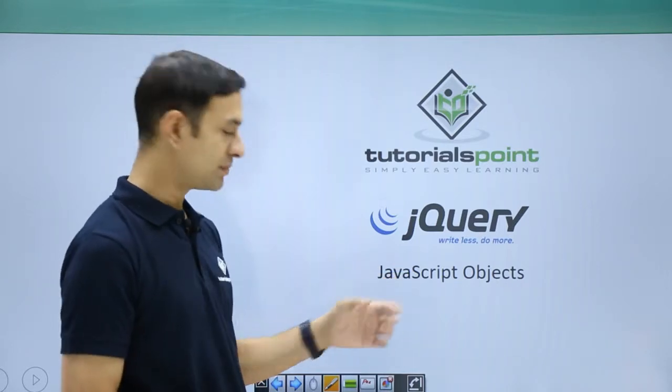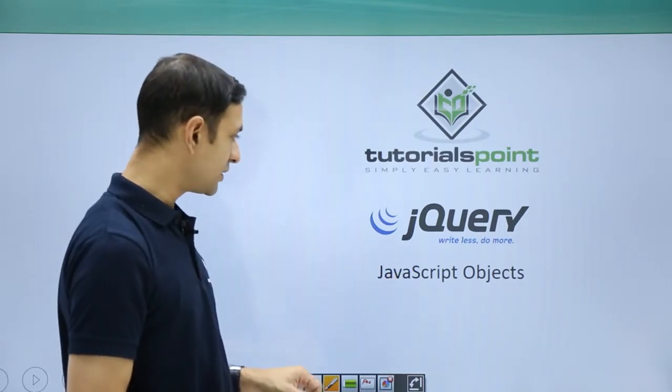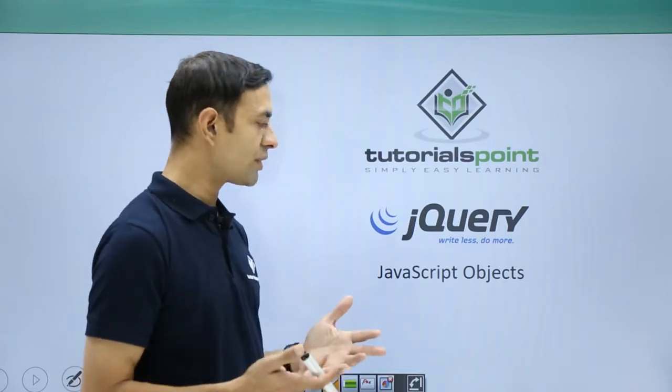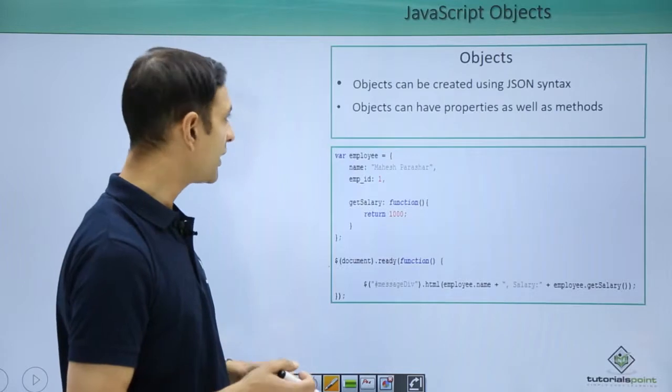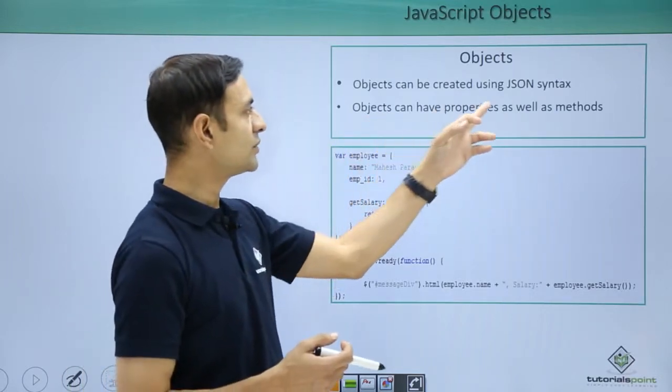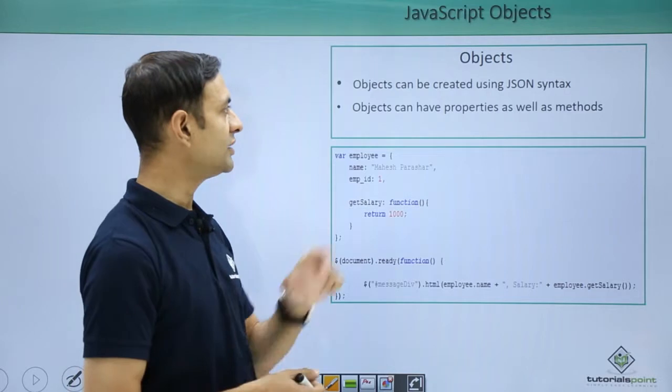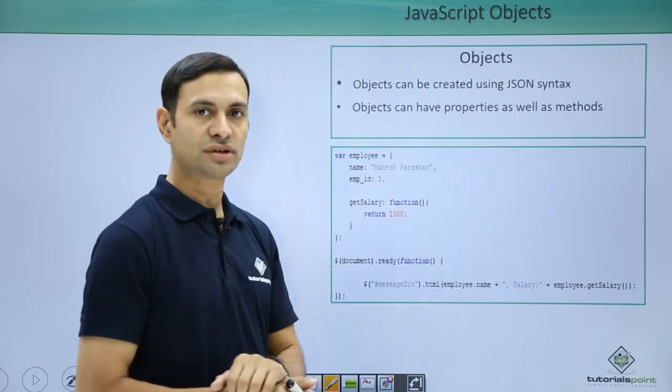This is a very important concept because as a beginner who works on JavaScript, they don't know about what object is. But JavaScript supports object in the manner that object can be created using JSON syntax. JSON is nothing but JavaScript object notation.